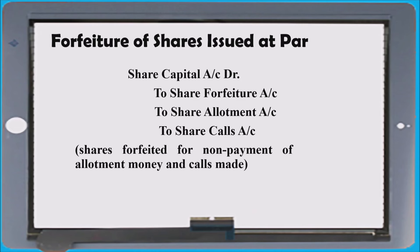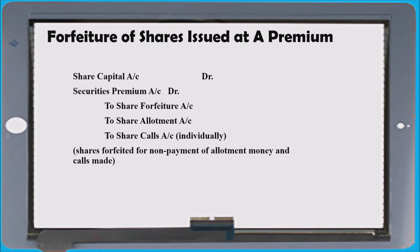Forfeiture entries are very important. Calls in arrears will always be debited and calls in advance will be credited. Calls in arrears will bring forfeiture or cancellation of shares. If issued at par, the entry will be: share capital to calls in arrears to share forfeiture — or you can write share capital to share forfeiture, to share allotment, to share first call, to share second call. If issued at premium: share capital, securities premium to share forfeiture, to calls in arrears.